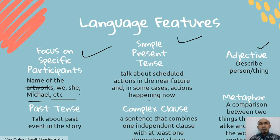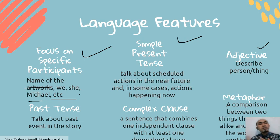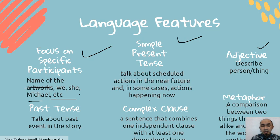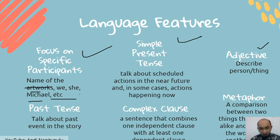Next is past tense. There will be past tense in your written review because it talks about past events. If you want to talk about events in the movie, you need to write them in past tense — not present tense, because those events have already passed.